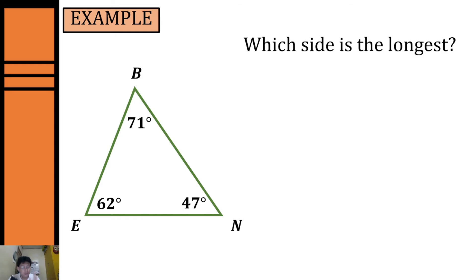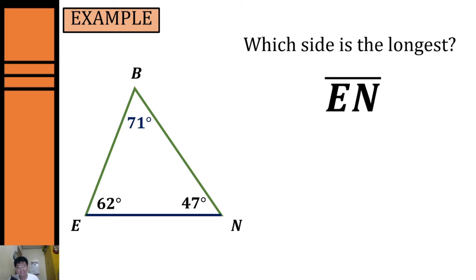Let's have another example. We're given a triangle and we are going to find the longest side. In order to find the longest side we have to identify the largest angle. In this triangle, angle B is the largest angle with 71 degrees. Using the Angle Side Inequality Theorem, the side opposite the largest angle will be the longest side, so our longest side will be side EN.